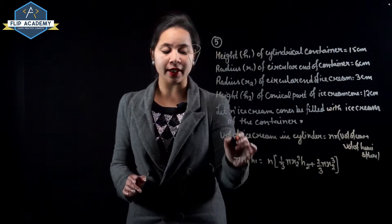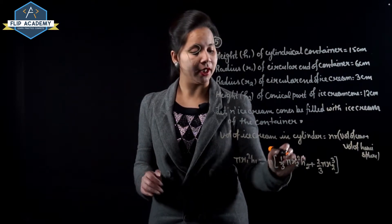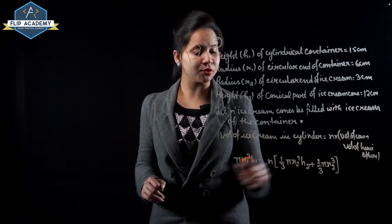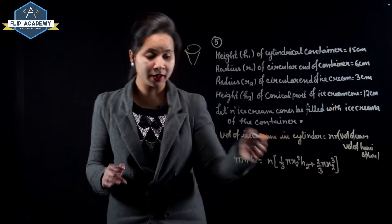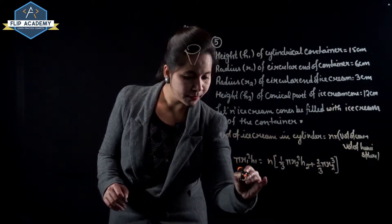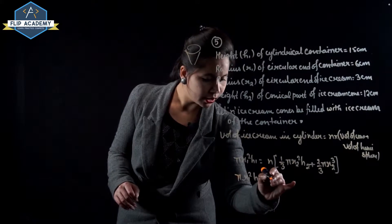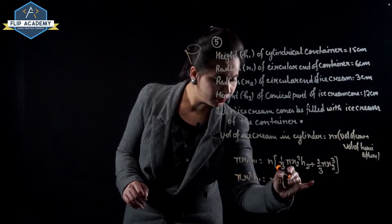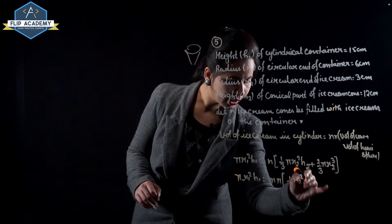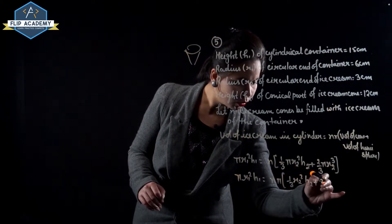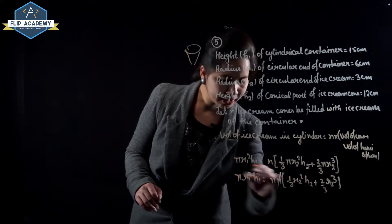Setting up the equation: π r1² h1 = n × (1/3 π r2² h2 + 2/3 π r2³). Pi cancels from both sides.